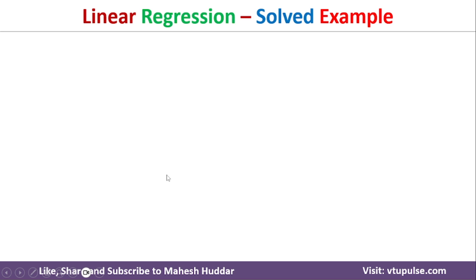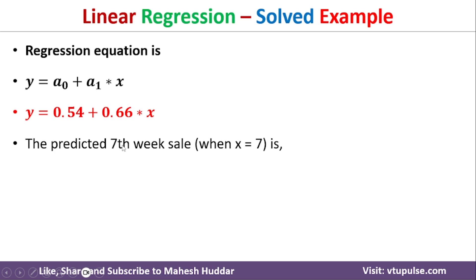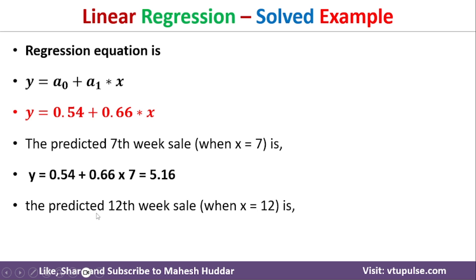Using this equation, we can predict sales for different weeks. For the seventh week, x = 7: substituting into the equation gives y = 5.16, meaning sales in the seventh week will be 5.16 thousand. For the twelfth week, x = 12: substituting gives y = 8.46, meaning sales in the twelfth week will be 8.46 thousand.